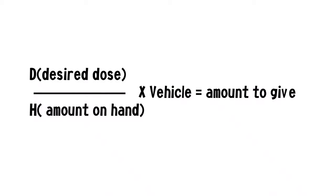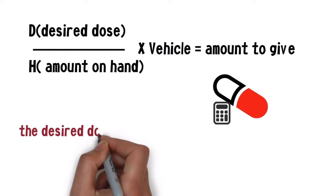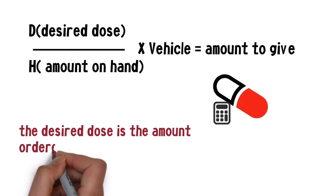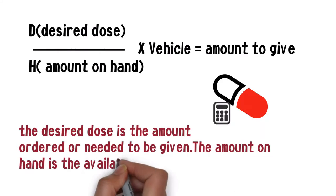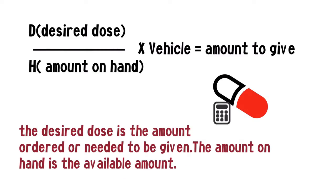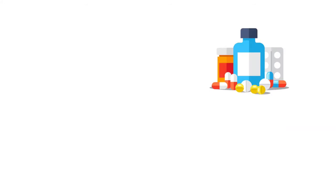The standard formula is: desired dose divided by the amount on hand, times the vehicle, which equals the amount to give. The desired dose is the amount ordered or needed to be given. The amount on hand is the amount available to give. The vehicle, as mentioned before, is the form of medication — you multiply by that to get the amount to give, which is your answer.